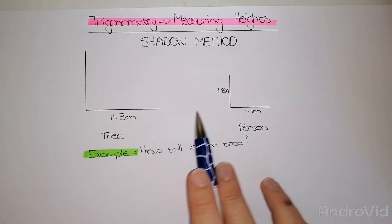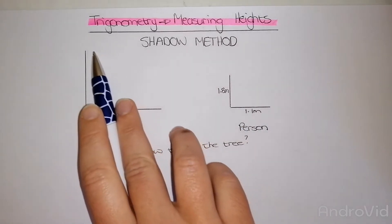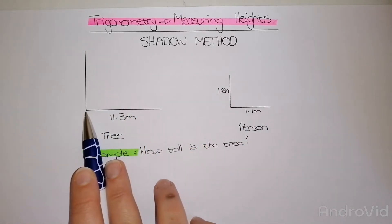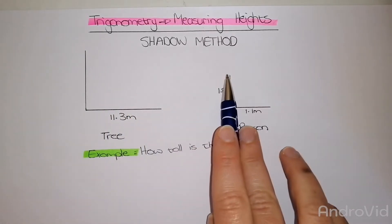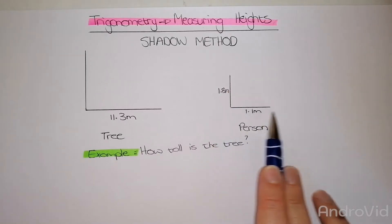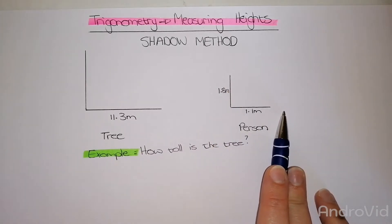The example we're going to use is a tree. So this is just a simple diagram I drew up. This is the height of the tree, this is the shadow that it casts, this is the height of a person, and the shadow that the person casts.